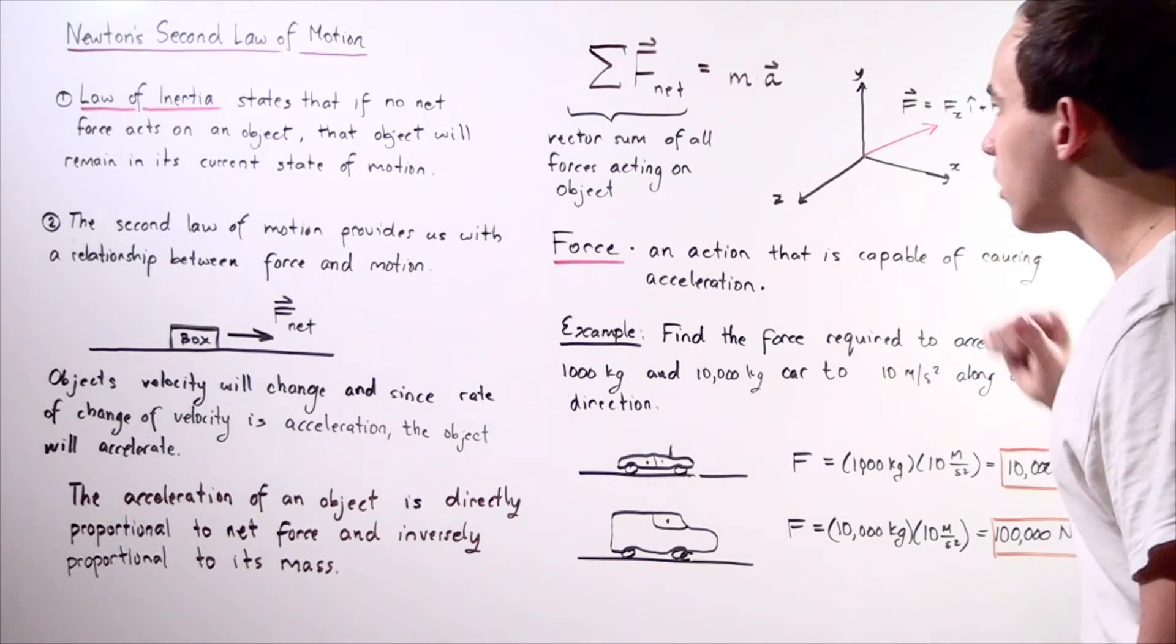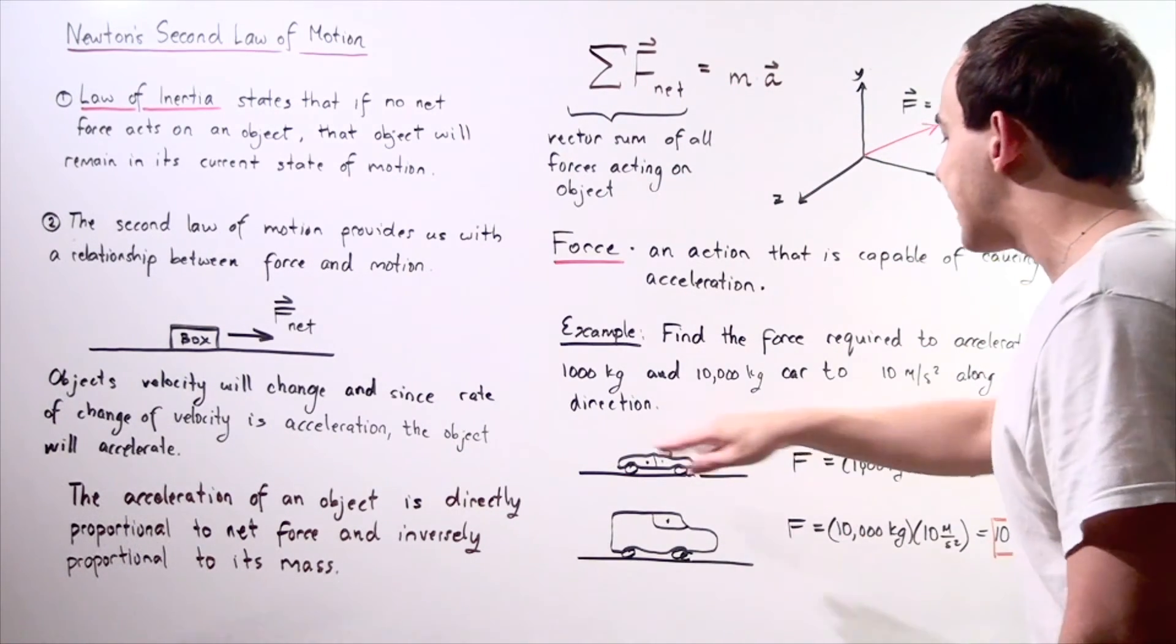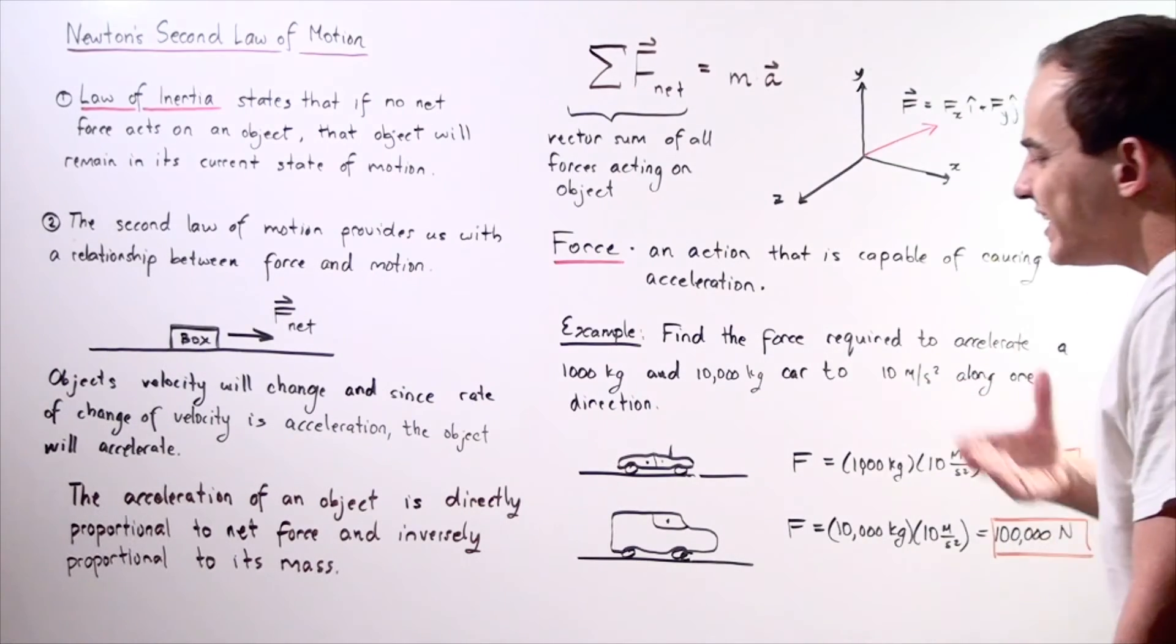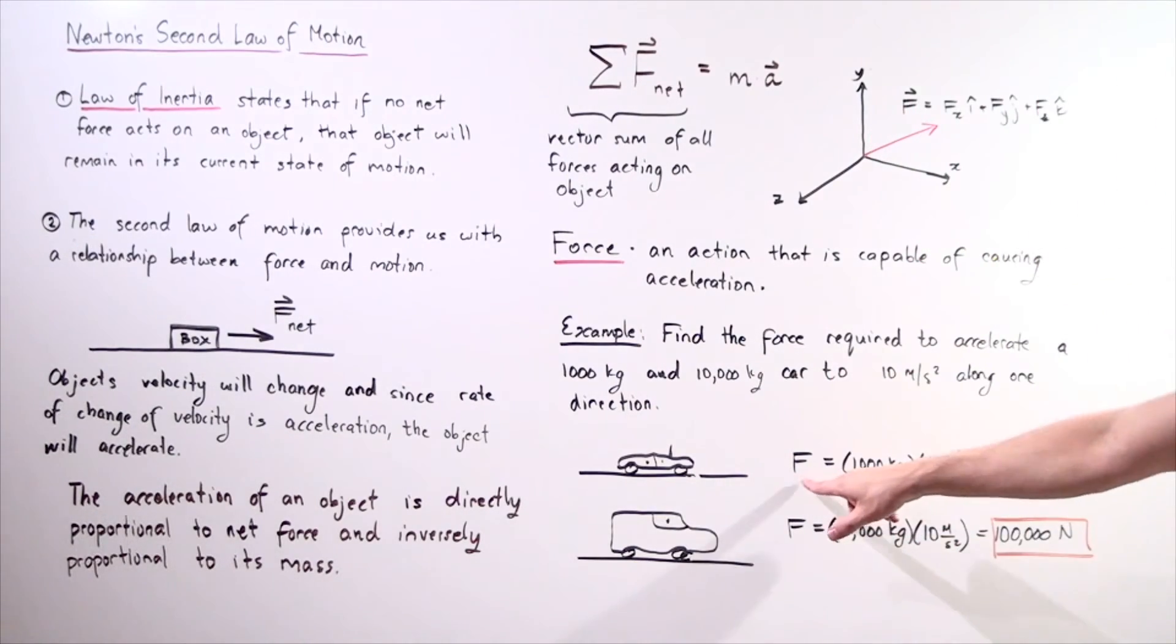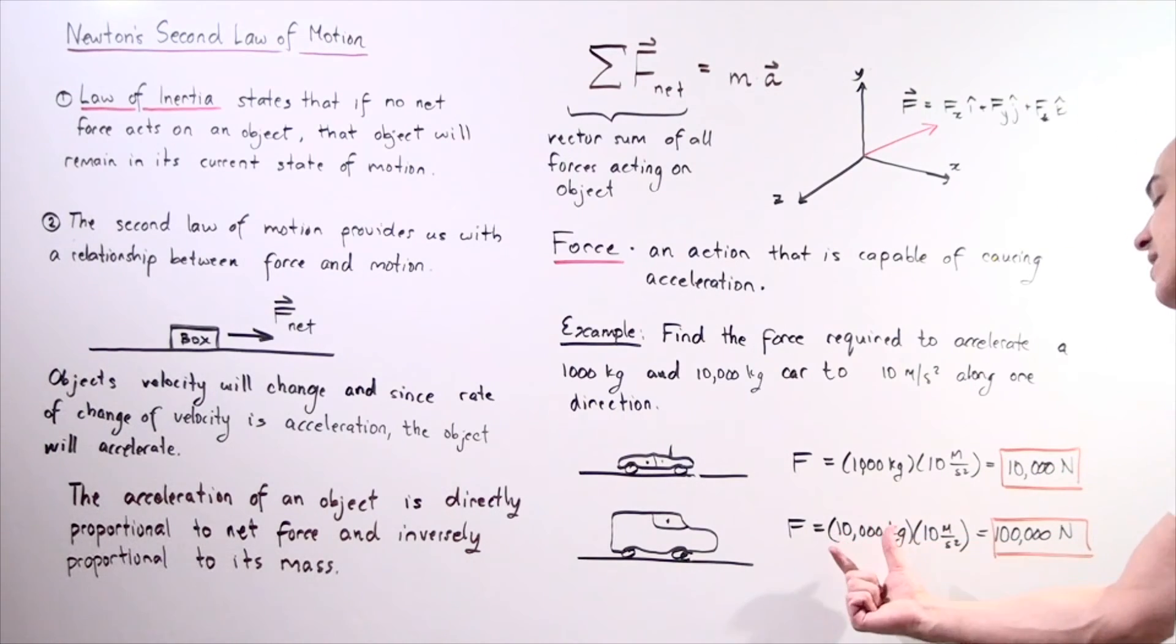We use this formula. We have forces acting along one direction and we neglect the friction. So we have F equals 1,000 kilograms times 10 gives us 10,000 newtons, and F equals 10,000 kilograms times 10, which is 100,000 newtons. So it takes 10 times more force to accelerate this more massive car to the same exact acceleration.